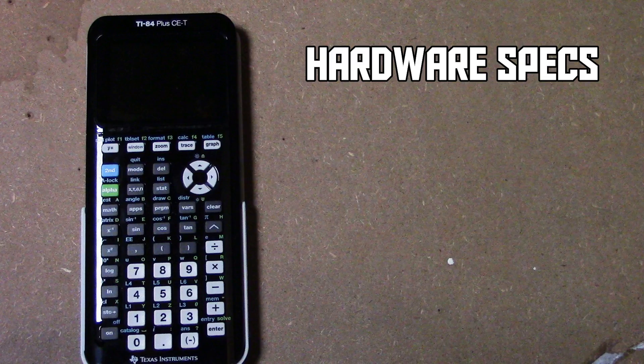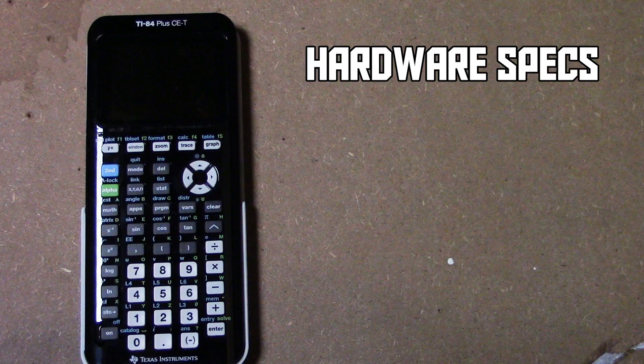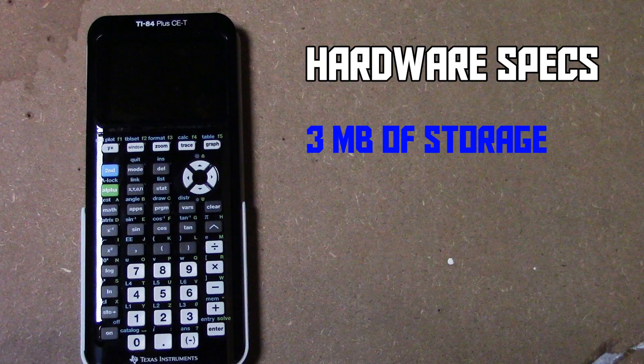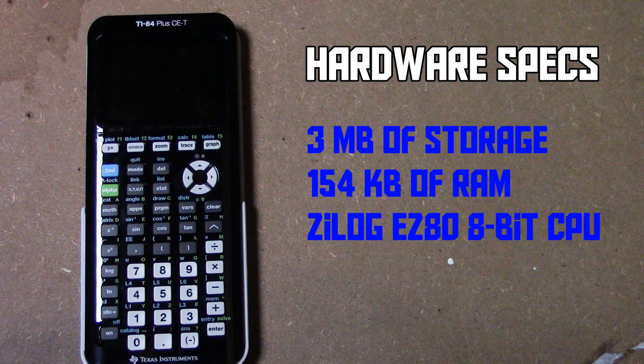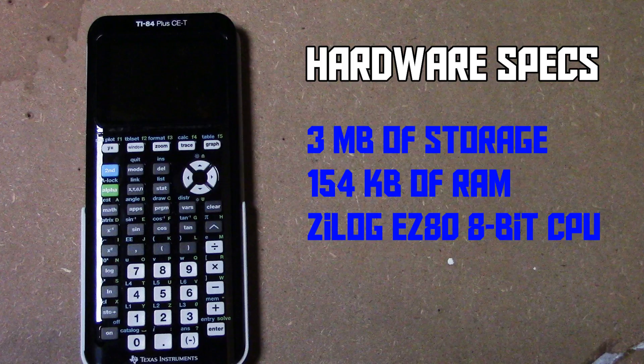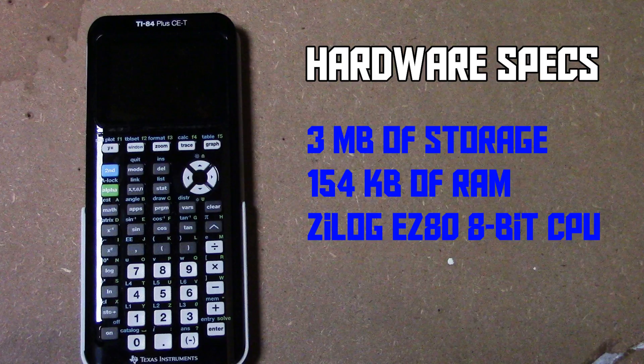When we get into the hardware specifications of this machine, it's actually quite disappointing. First of all, it's got 3MB of on-board storage. Yes, that's right, 3MB, not gigabytes. It's got 154KB of RAM, and an 8-bit processor. That is indeed very low spec, and normally I wouldn't care about that on just a calculator. But,